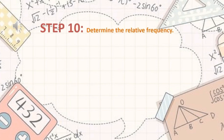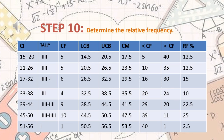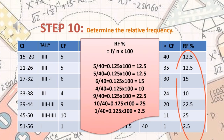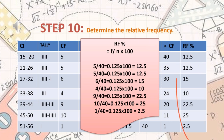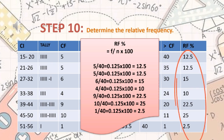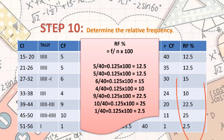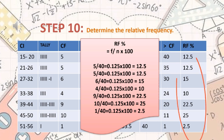Our last step is step 10: determine the relative frequency. The formula is F divided by N times 100. For example: 5 divided by 40 equals 0.125, times 100 equals 12.5, and so on and so forth.